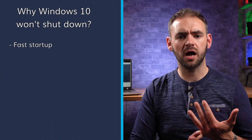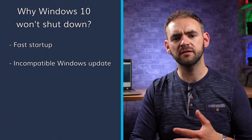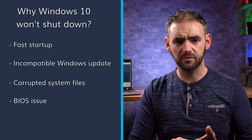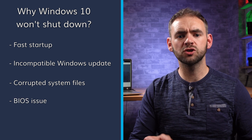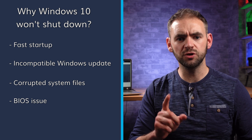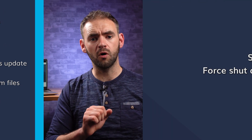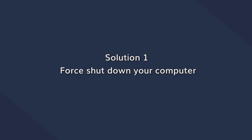Before I help you fix the issue, let's understand the reasons why Windows 10 won't shut down. There can be various reasons for this issue to arise, such as fast startup, incompatible Windows updates, corrupted system files, or BIOS settings. Whatever the reason may be, I'll show you 8 simple solutions that you can use to solve this problem. One way you can fix this issue is by cutting off the power source.